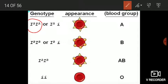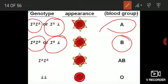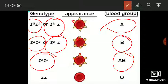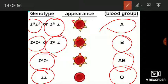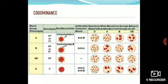If an individual has the genotype IA IA or IA i, they possess antigen A on the surface of their RBCs and the blood group is A. If they have IB IB or IB i, they possess antigen B and the blood group is B. If they have IA IB, both antigens are present and blood group is AB. If they have ii, no antigens are present on the RBC surface and blood group is O. There are six possible genotypes and four possible phenotypes.